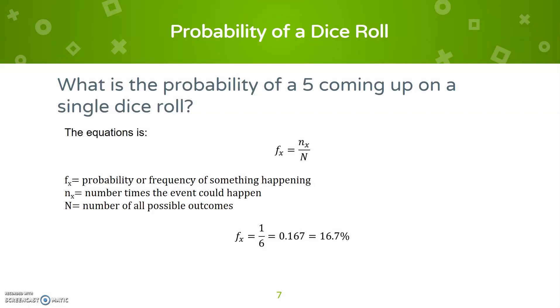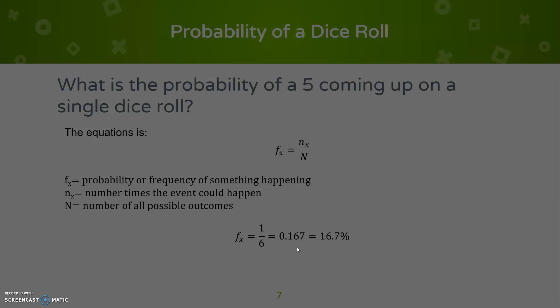So what is the probability of a five coming up on a single dice? Well, there's one chance that the five will show up on a dice. But there are six possible combinations that could happen: one, two, three, four, or five. So it becomes one over six or 0.167 or 16.7%.